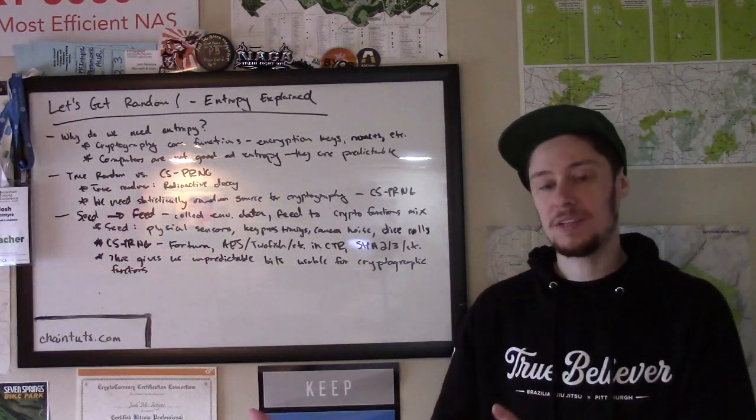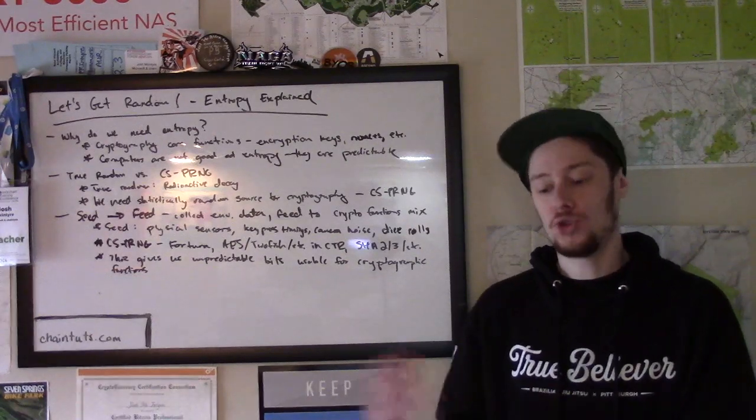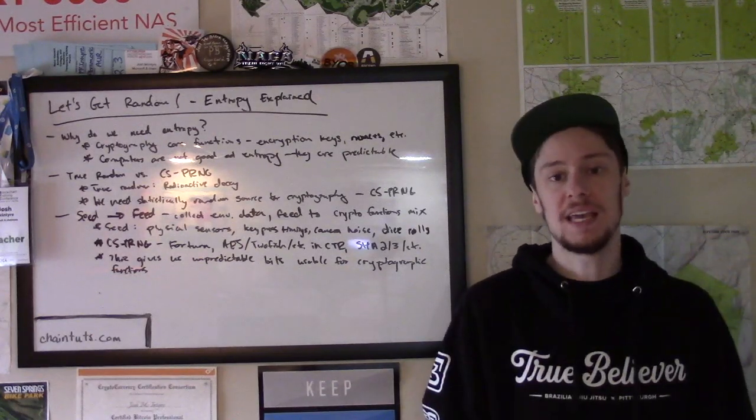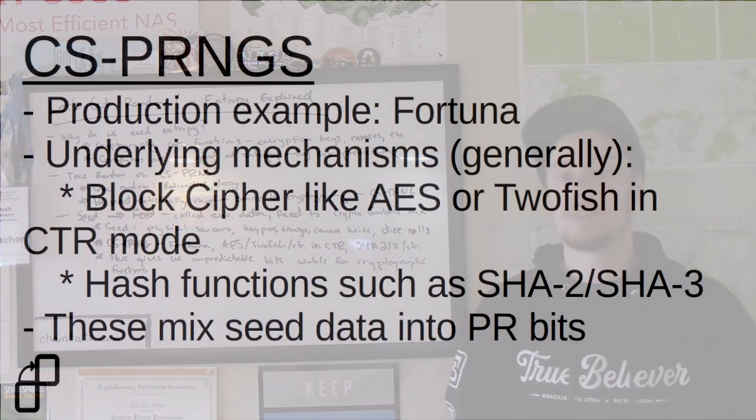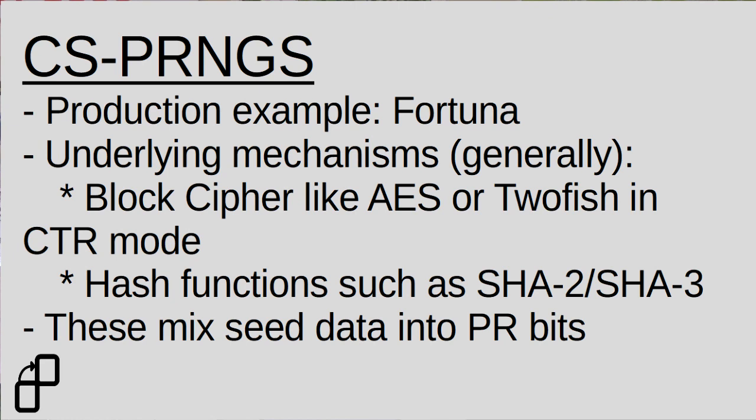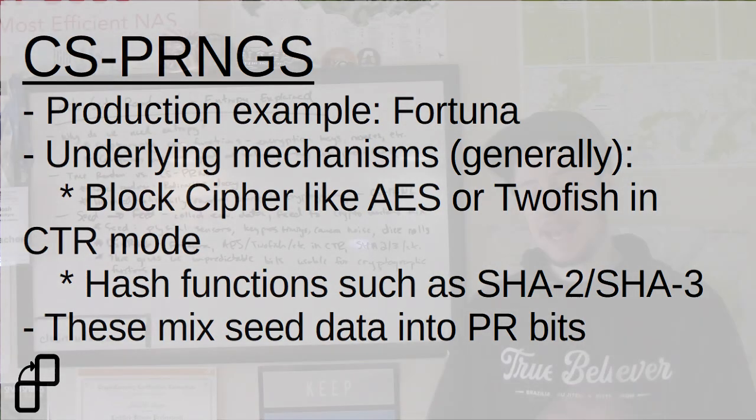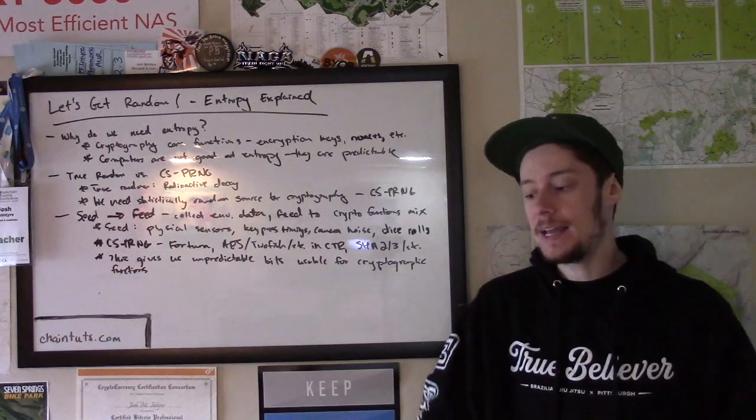So if you have the bits that come out on the other end, there's no way to tell what the input seed information was. This is the same with hash functions, cryptographically secure hash functions I should say, like SHA-2 and SHA-3. These are just examples of ways that you can take in seed data and get data out the other end that is statistically unpredictable.